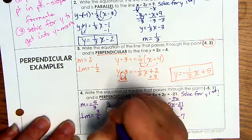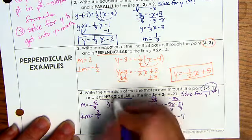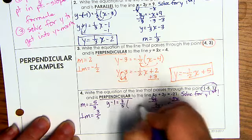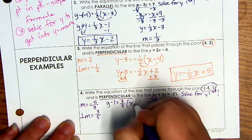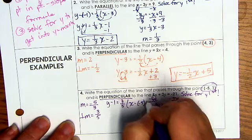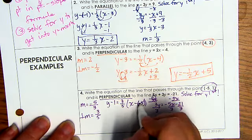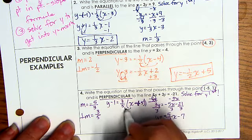So we have y minus, now I use this point, 1 equals 3 fifths, open parentheses, x minus negative 5. Well, that's a double negative. So this is going to become a big plus. And now we distribute.